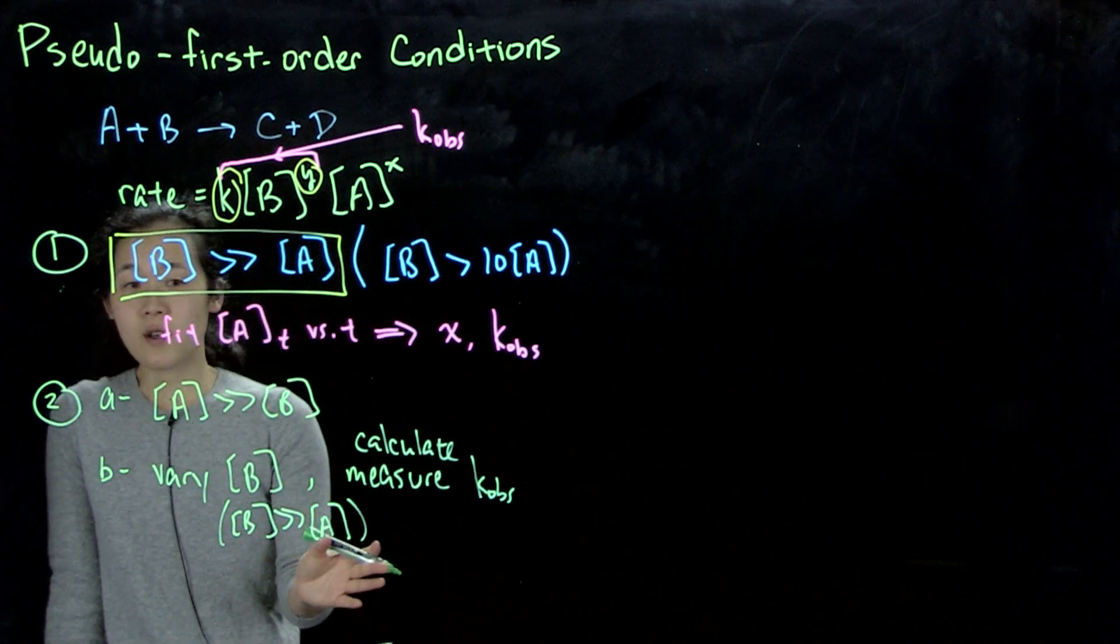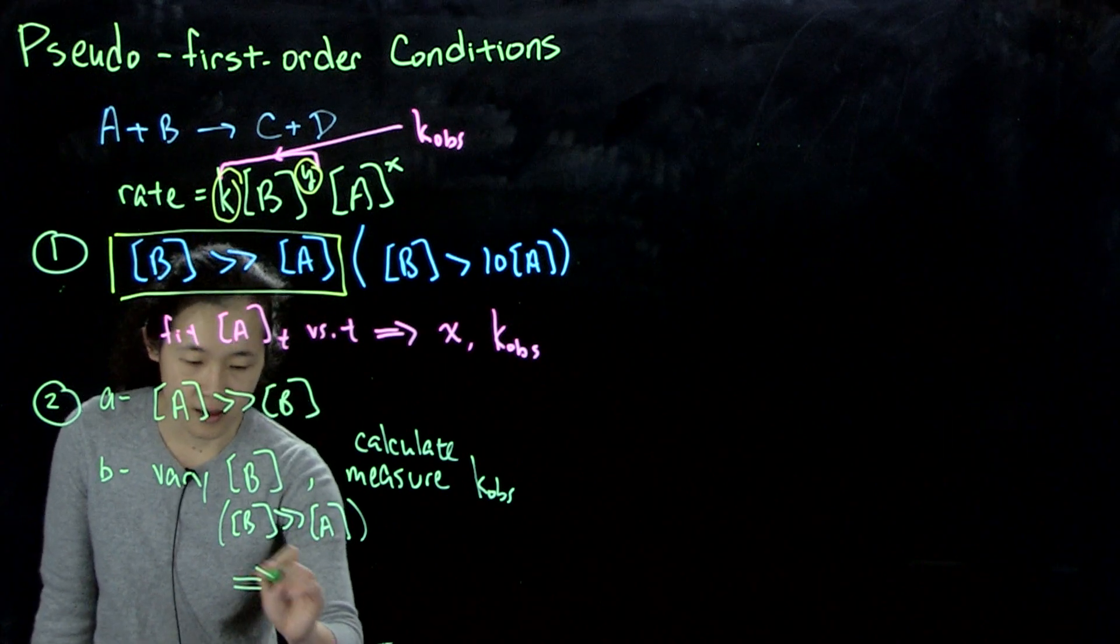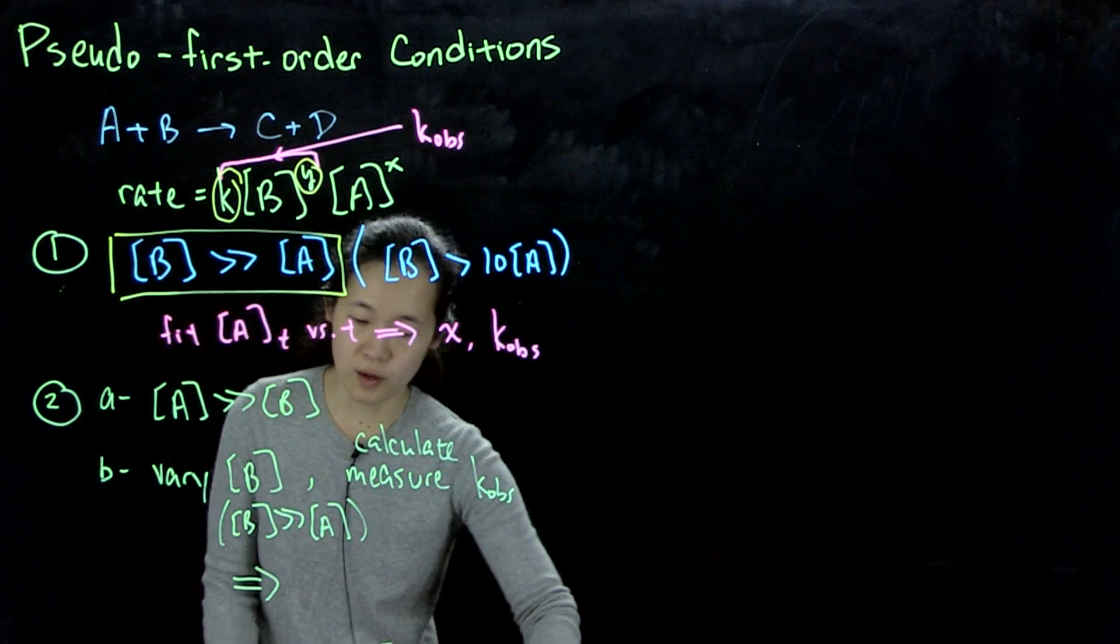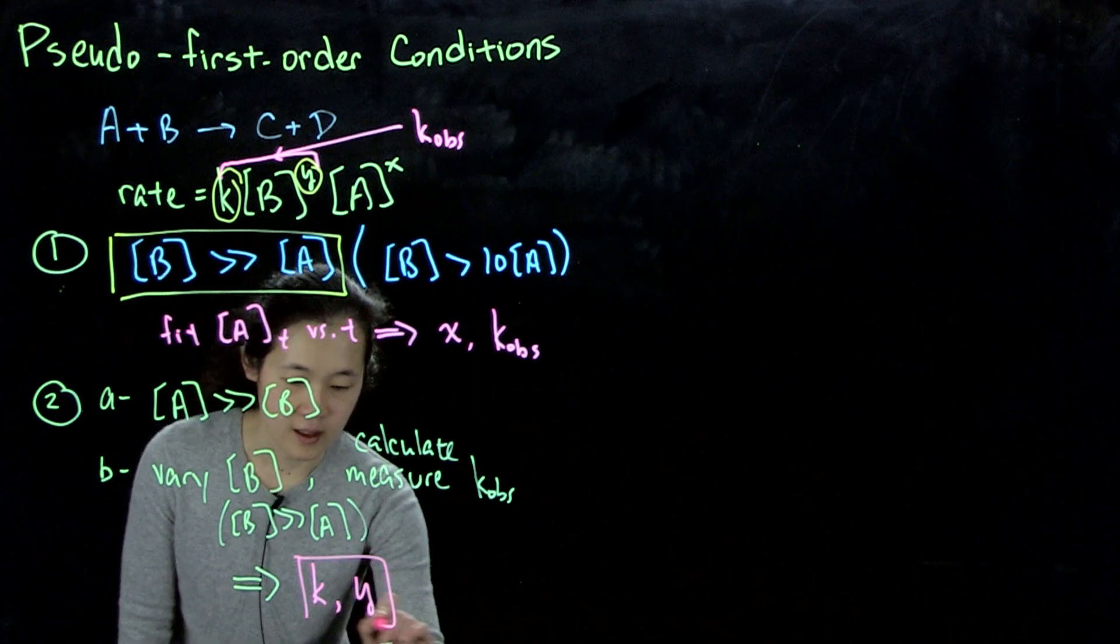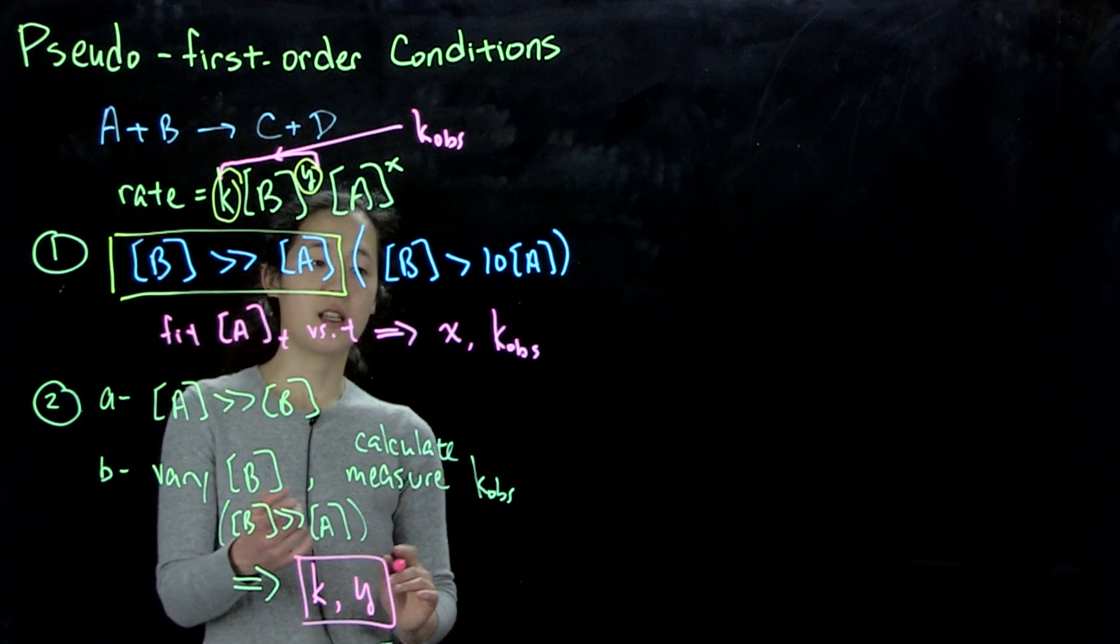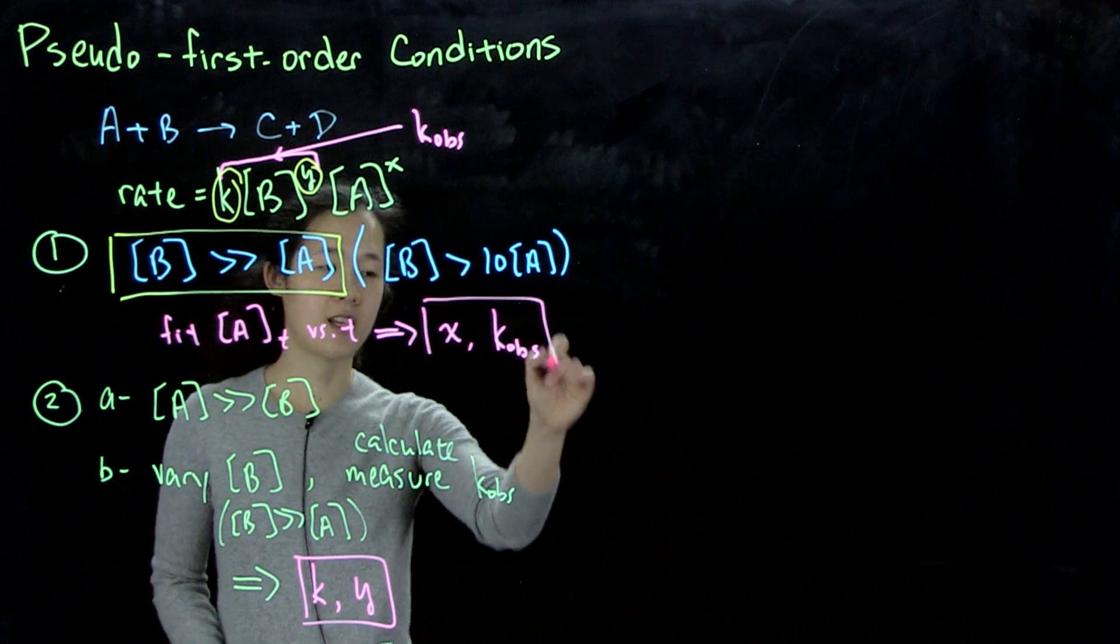So what this will do is, this will give us what we want, which is, we'll get k and we'll get y. Step two is to get this. Step one gave us x and k_ob.